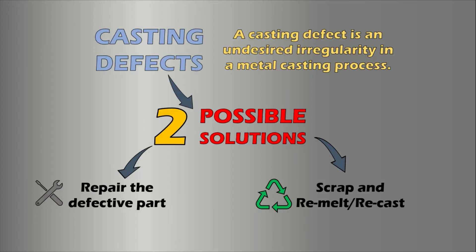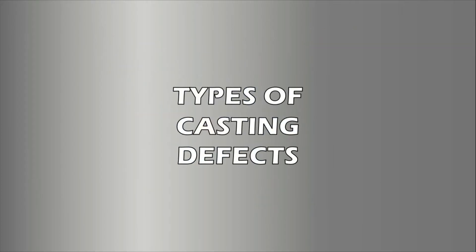On the other hand, if the part is unrepairable or not economical to repair, such parts are considered as scrap and thrown into the furnace to remelt and recast. Either way, repairing or remelting incurs loss of resources which could otherwise be used to produce more parts. This is a loss to the industry, thus casting defects should be avoided as much as possible.